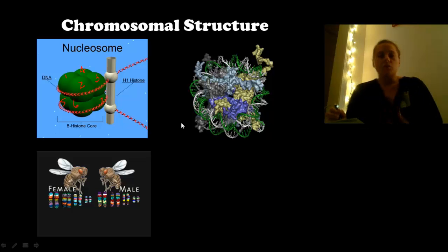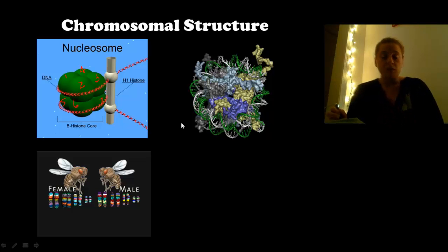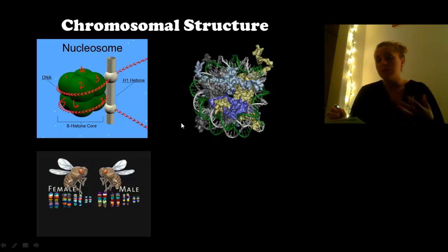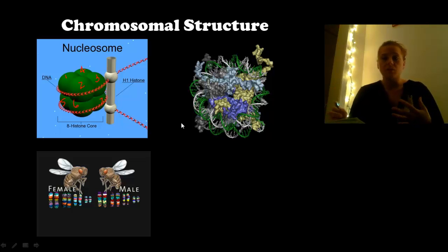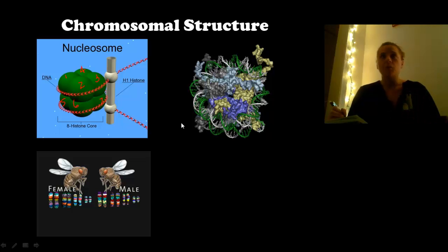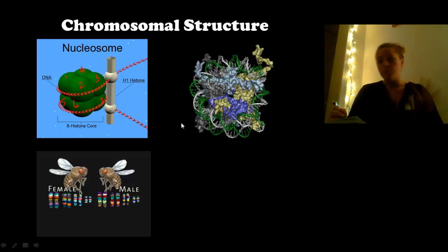In sexually reproducing organisms, chromosomes all come in pairs, so you find even numbers. The fruit fly — kind of the poster child animal of genetics — has eight chromosomes, four pairs. We humans have 46 total chromosomes, 23 pairs.